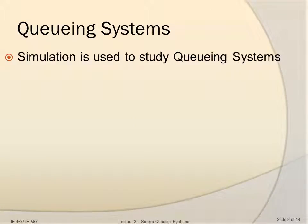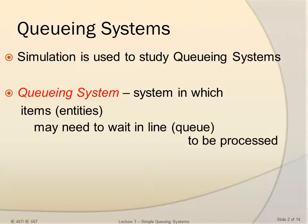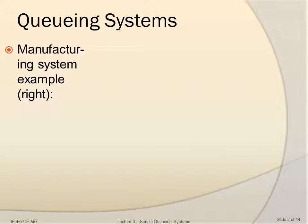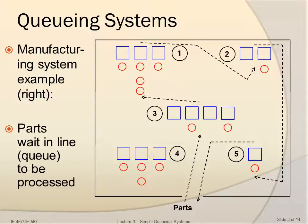Queuing systems. Simulation is used to study queuing systems. A queuing system is a system in which items called entities may need to wait in line, called a queue, to be processed. For example, in a manufacturing system, you might have parts moving around workstations and they wait in line or queue to be processed.